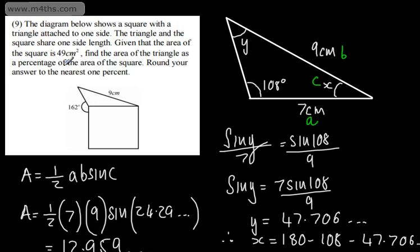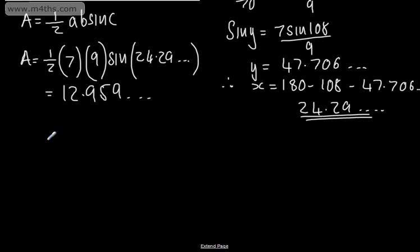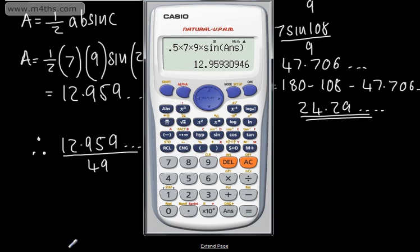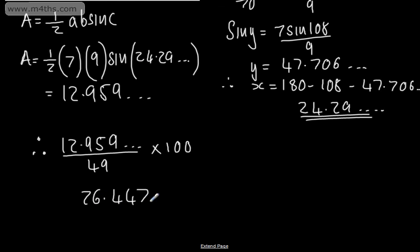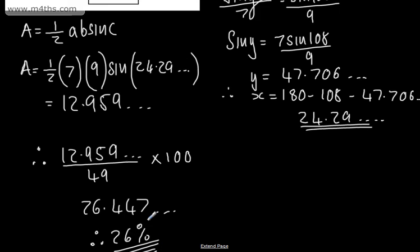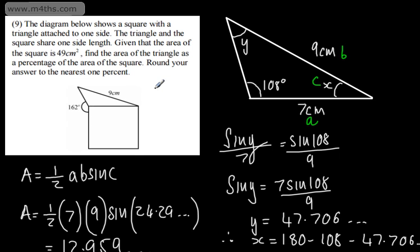So let's now look at that as a percentage of the area of the square. What we've got is 12.959 over 49 multiplied by 100. We can divide by 49 and multiply by 100, and that gives me 26.447. Therefore, we're going to have 26% to the nearest 1%. So it's just over one quarter of the area of the square.